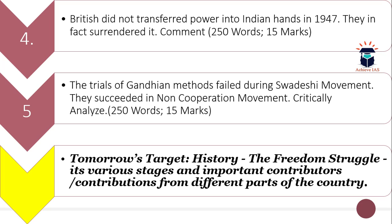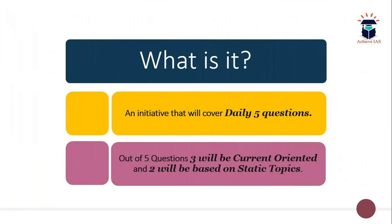These are the five questions for today. Tomorrow's target is also on the freedom struggle — its various stages and important contributors and contributions from different parts of the country. For students seeing this video for the first time, this is an initiative in which we daily give you five questions: three are current-oriented and two are static-oriented.